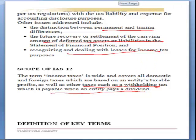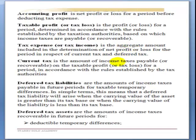Accounting profit is arrived at by taking income and reducing expenses from it. However, for tax purposes, certain items are not allowed — such as depreciation and profit or loss on disposal of non-current assets — so these are adjusted. Taxable profit differs from accounting profit due to these adjustments.